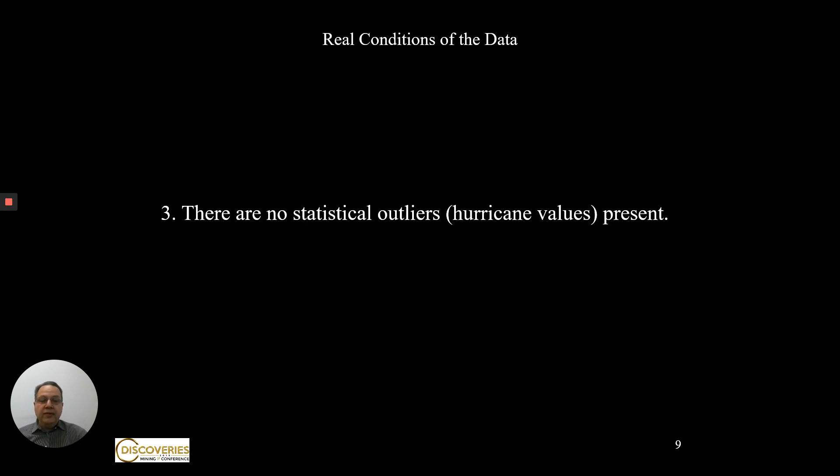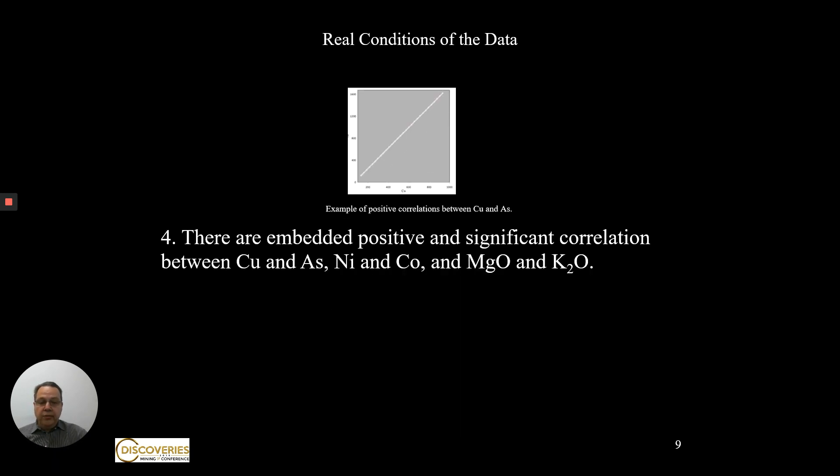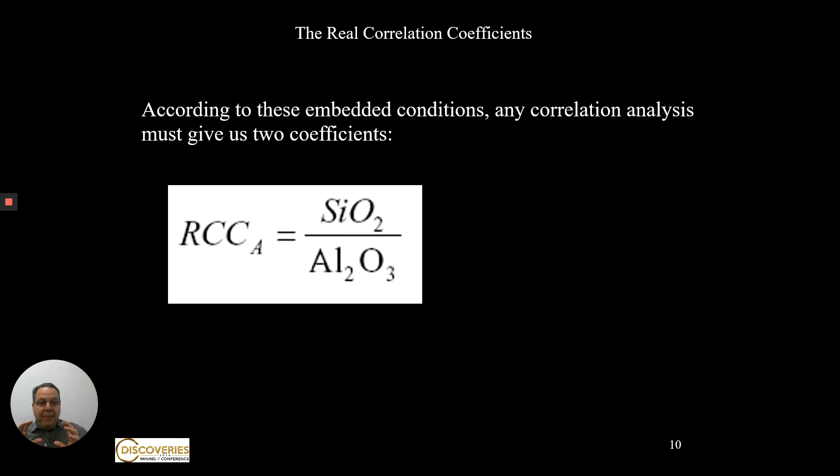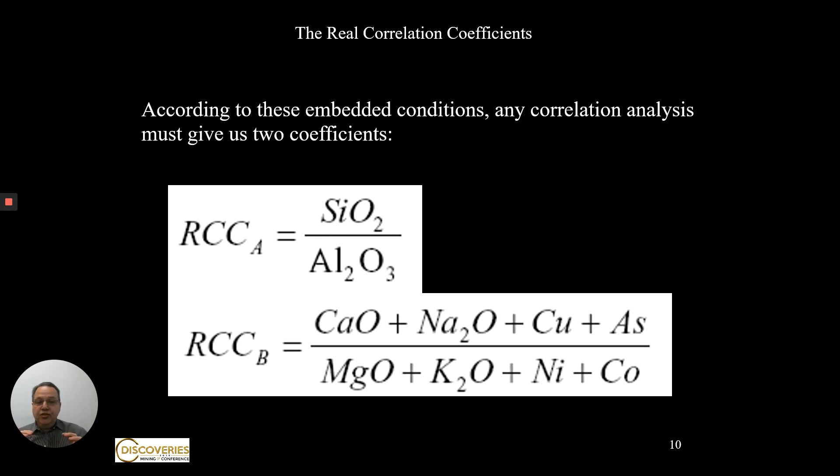There were no statistical outliers or hurricane values present. There were also embedded positive significant correlations between certain elements like copper, arsenic, nickel and cobalt, as well as negative significant correlations between other elements like potassium, calcium, silica, aluminum, etc. So according to these embedded conditions, any correlation analysis should give me these two sets of coefficients.